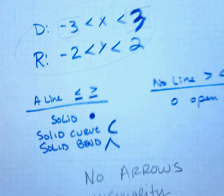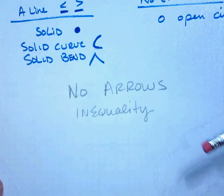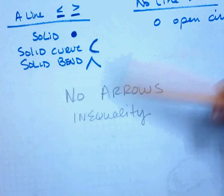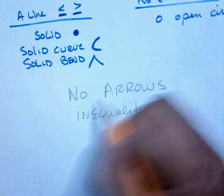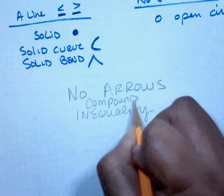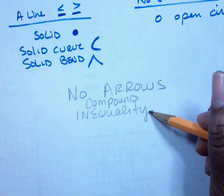Okay, so we're still in third period, and we just discovered that we needed to add this to the video. When you see no arrows, we are talking about a compound inequality because you're going to have two numbers.